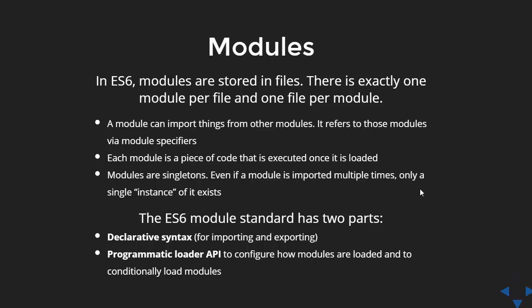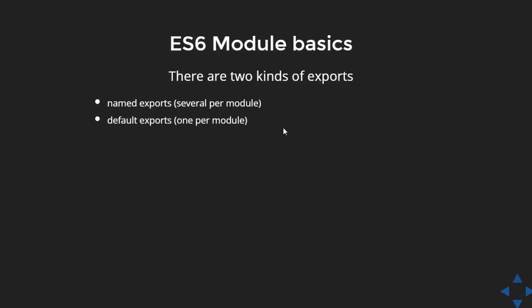Let's talk about ES6 modules. In our application, we will have modules stored in different files — it can be either one module per file or one file having multiple modules. One module can import things from another module. This is called exporting and importing: from one file you are exporting modules, and in another file you are importing those modules. Let's talk about how we can do export and import when working with different files.